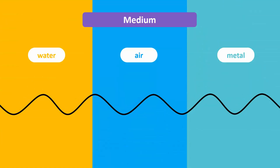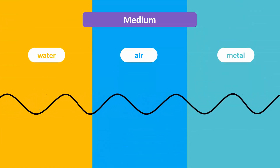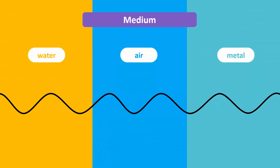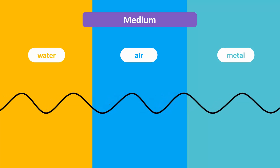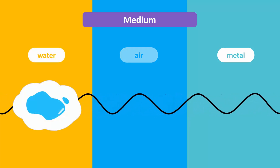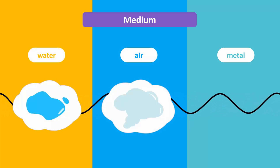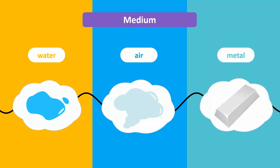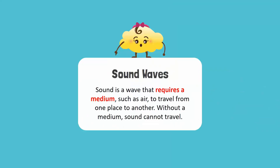Most waves carry energy and need a medium to travel from one place to another. A medium can be water, air, metal, or anything through which waves can transfer energy. For instance, sound is a wave that requires a medium, such as air, to travel from one place to another.